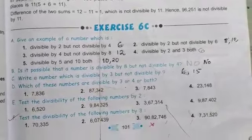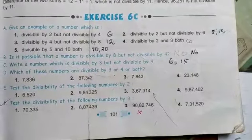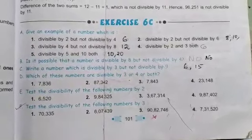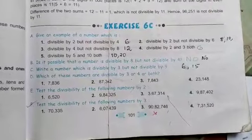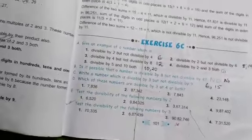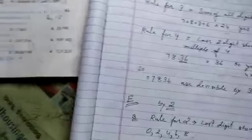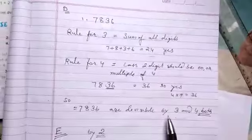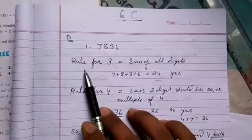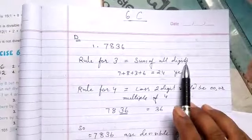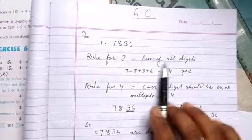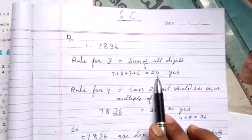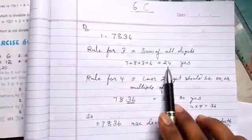Coming to part D: what of this number is divisible by three or four or both? We need to do this in the copy. The rule for three is that the sum of all digits should be divisible by three. For the question 7836: seven plus eight plus three plus six equals 24, and 24 is divisible by three, so yes, it is divisible by three.